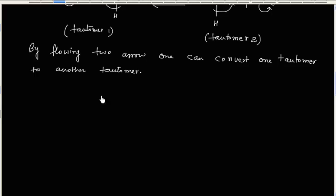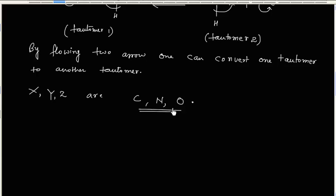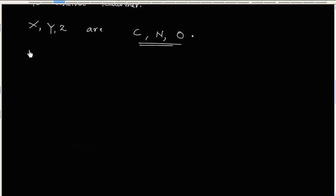Generally, the X, Y, and Z atoms are carbon, nitrogen, and oxygen. So there are three possibilities for each of the X, Y, Z atoms — it can be carbon, nitrogen, or oxygen. By choosing different atoms for X, Y, and Z, we will get different types of tautomerism.